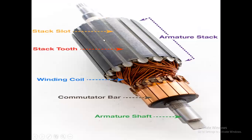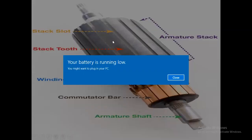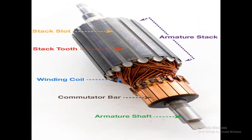Here you can see the shape of the armature. This is the armature stack, and these are the armature slots in which the armature winding is placed. You can also see the slot and the stack tooth — like the many strips of the armature.